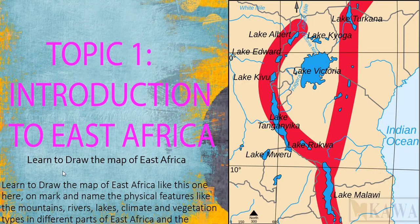As an exercise, a teacher should support the learner to draw the map of East Africa like the one shown here, and locate the major physical features such as rivers, lakes, climate and vegetation zones, and the types found in different parts. Learners should be able to name the rivers as seen on the map, and teachers are expected to refer to the Atlas.